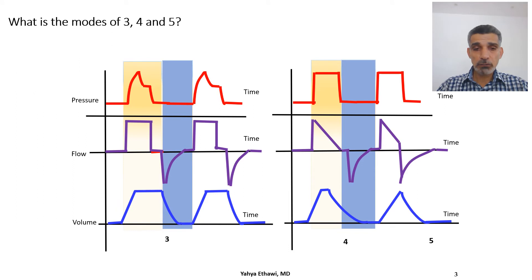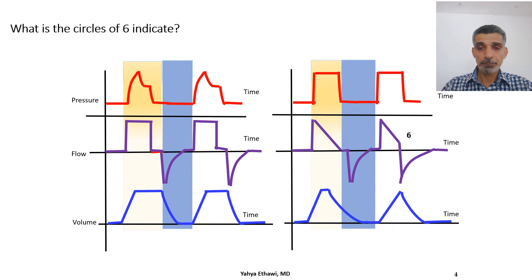And by looking at number three, four, and five—by five I mean this area—can you guess what is the mode of ventilation of each? And by looking at the two circles, can you guess what these two circles are trying to show and what is the importance of this point within this circle?